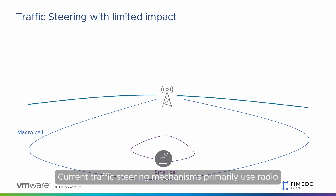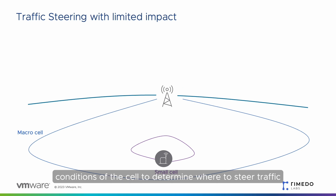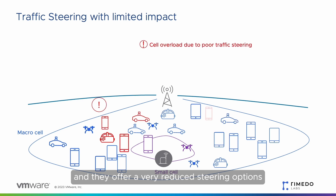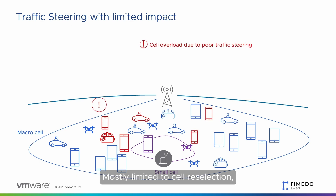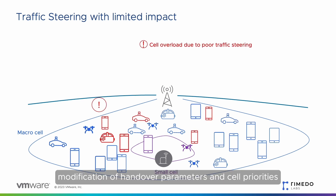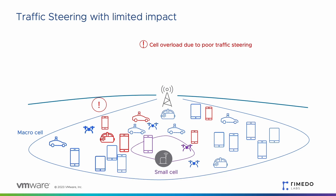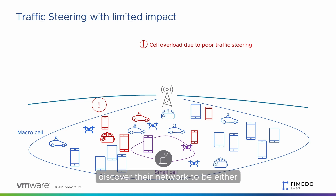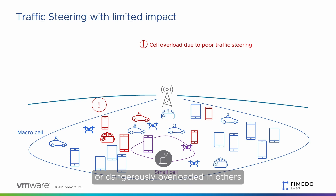Current traffic steering mechanisms primarily use radio conditions of the cell to determine where to steer traffic, and they offer very reduced steering options, mostly limited to cell reselection, modification of handover parameters, and cell priorities. Communication service providers, or CSPs, adopting these traffic steering methods discover their network to be either underutilized in some areas or dangerously overloaded in others.